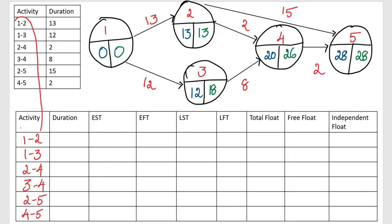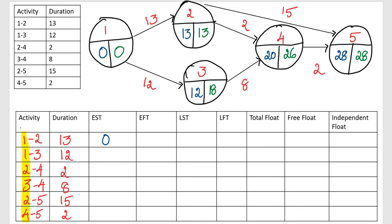This activity table is where we now record all values. Let's park the activity names, durations, and early start times. When filling in EST, always look at the start node of the activity. So for activity 1-2 the EST is 0, for activity 1-3 the EST is 0, for activity 2-4 the EST is 13, for activity 3-4 the EST is 12, and for activity 2-5 the EST is 13. For LFT, always take the value from the end node of the activity. For activity 1-2 the LFT is 13.